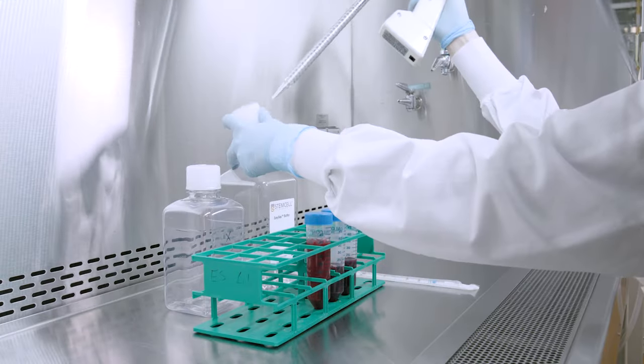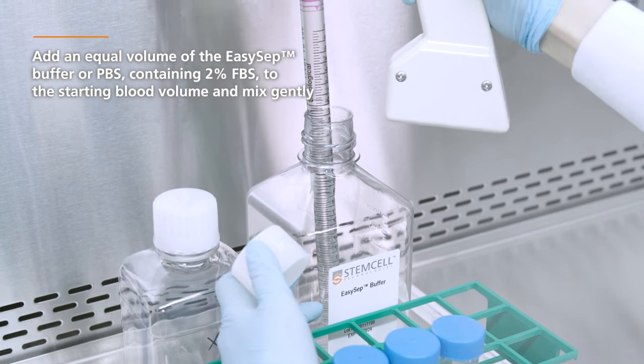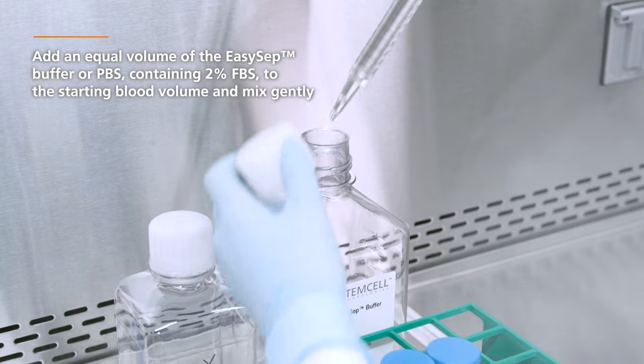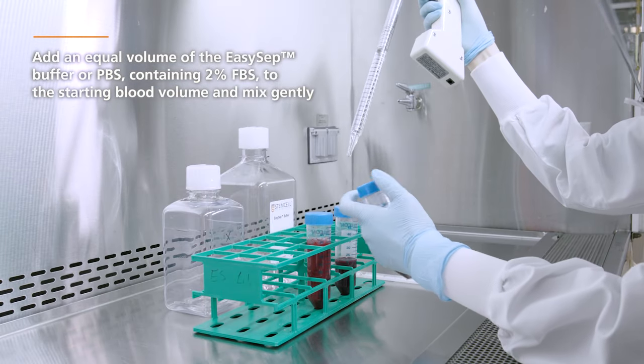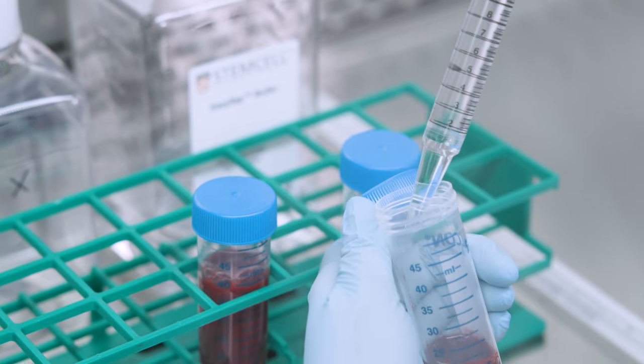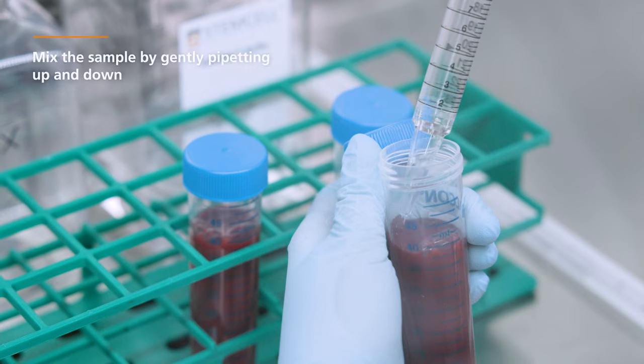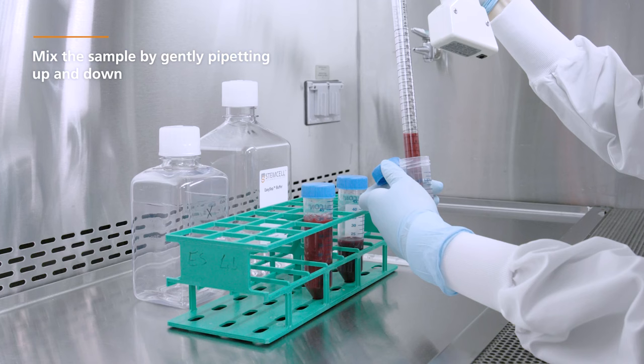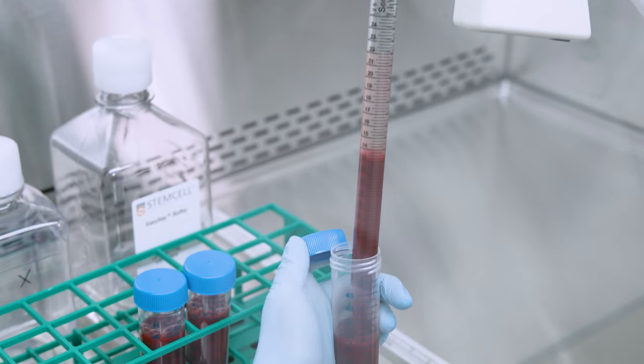In a biological safety cabinet, add an equal volume of the EasySep buffer, or PBS, containing 2% FBS to the starting blood volume, and mix gently. For example, add 20 mL of buffer to a 20 mL whole blood sample. Mix the sample by gently pipetting up and down 3 times using a 25 mL serological pipette.